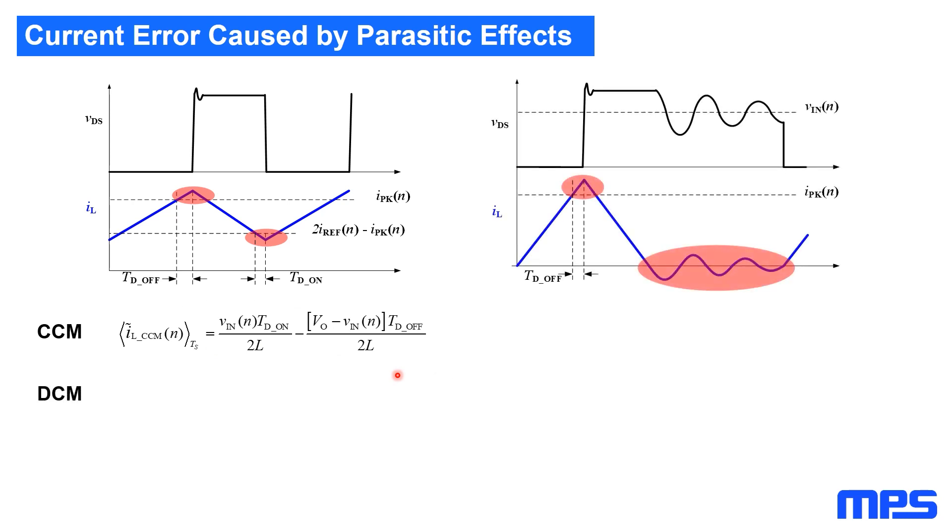In DCM conditions, as the current always starts from zero, the turn-on delay does not matter anymore. But the overshoot caused by the turn-off delay is still there. Besides, the DCM oscillation brings another error into the current control. The effects become more obvious as the load decreases. So in order to get an accurate current, the oscillating current must also be taken into consideration.